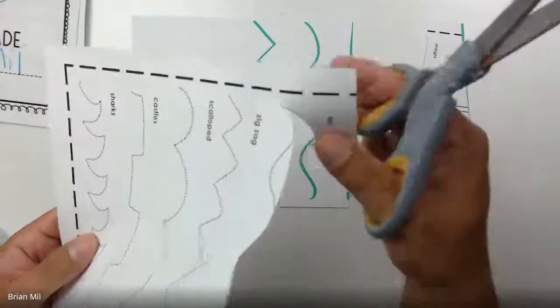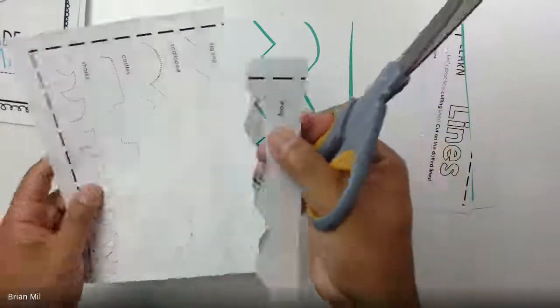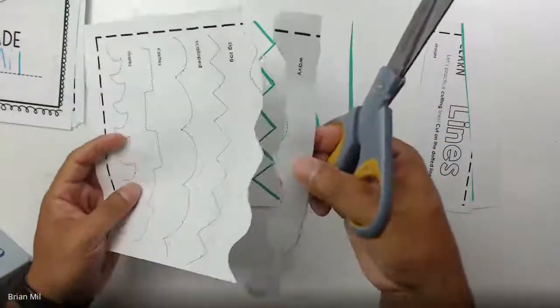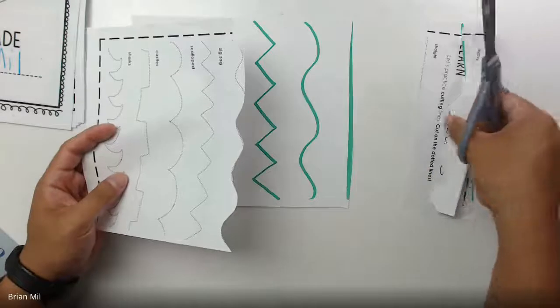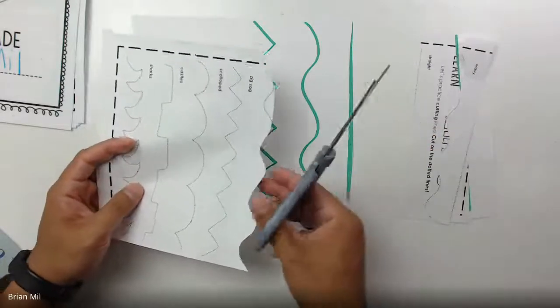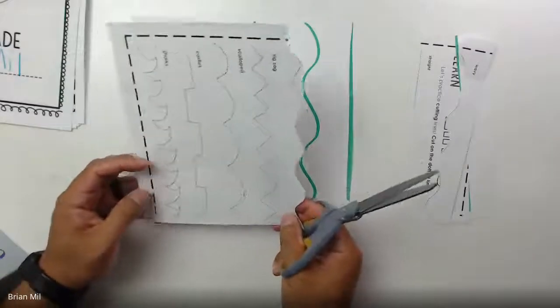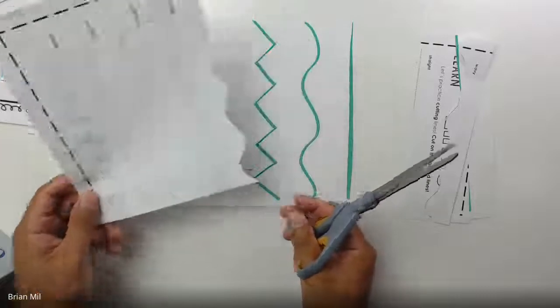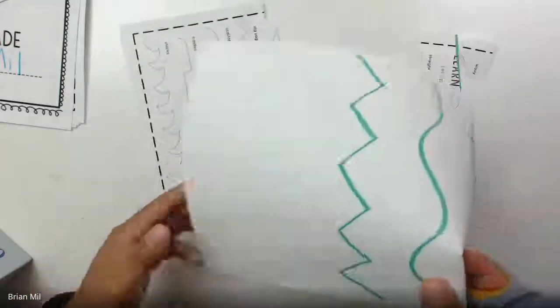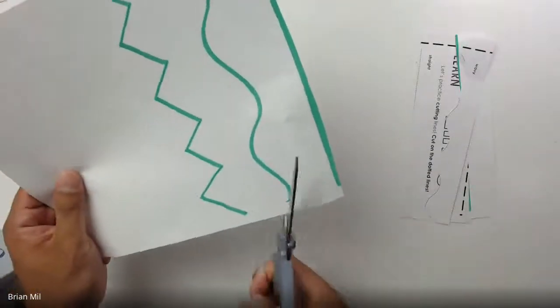Sometimes a lot of kids open the scissors all the way like this. I've noticed that sometimes it's harder to get control. If you just put the blade like a little bit smaller like this and then just try to do small little movements with your hands, instead of going really big, you might have an easier time cutting.